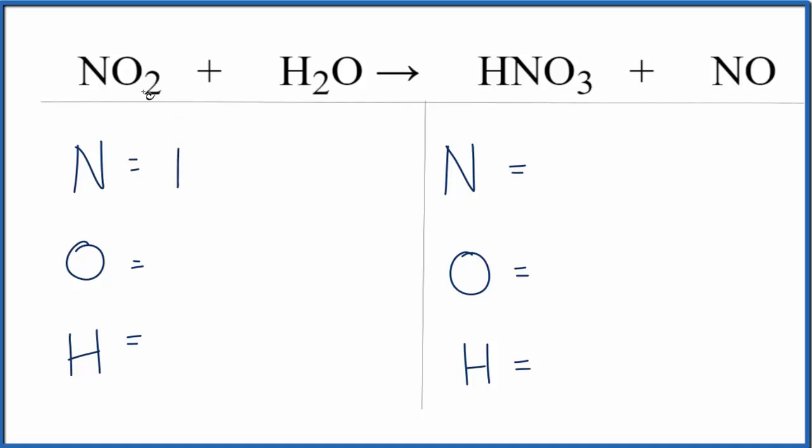We have one nitrogen, we have two oxygens here, plus we have this one here. So we have three oxygens and then the two hydrogens. Over on the product side, we have one nitrogen plus this other nitrogen right there. That gives us two of those three oxygens plus the one. That gives us four oxygens, and then we have just one hydrogen.